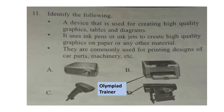Question 11: Identify the following. A device that is used for creating high quality graphics, tables and diagrams. It uses ink pens or inkjets to create high quality graphics on paper. They are commonly used for printing designs of car parts, machinery, etc. The correct answer is option D.